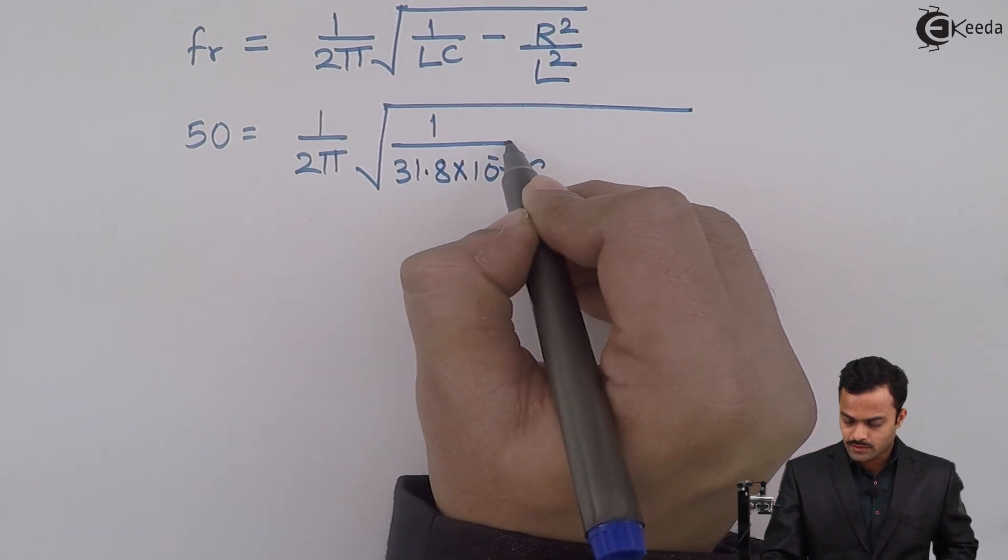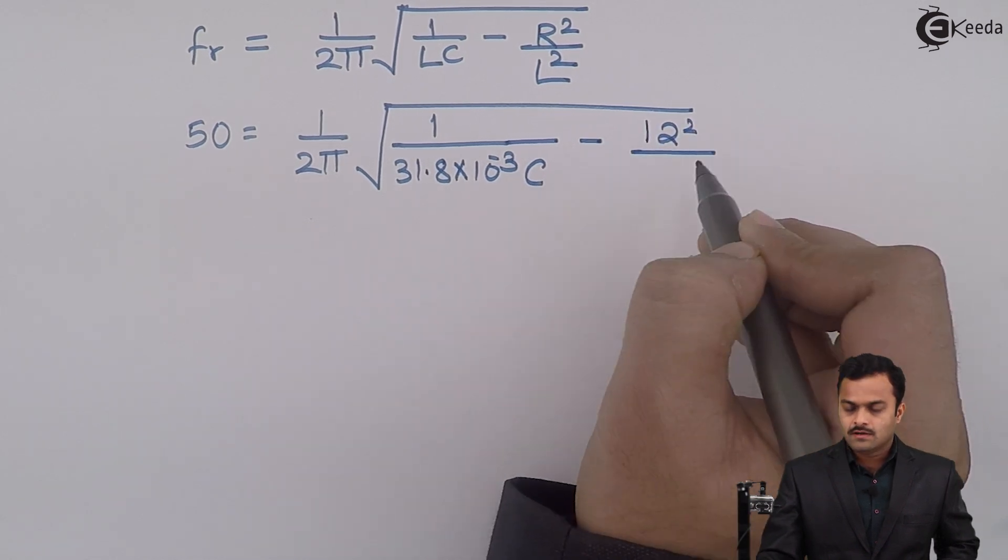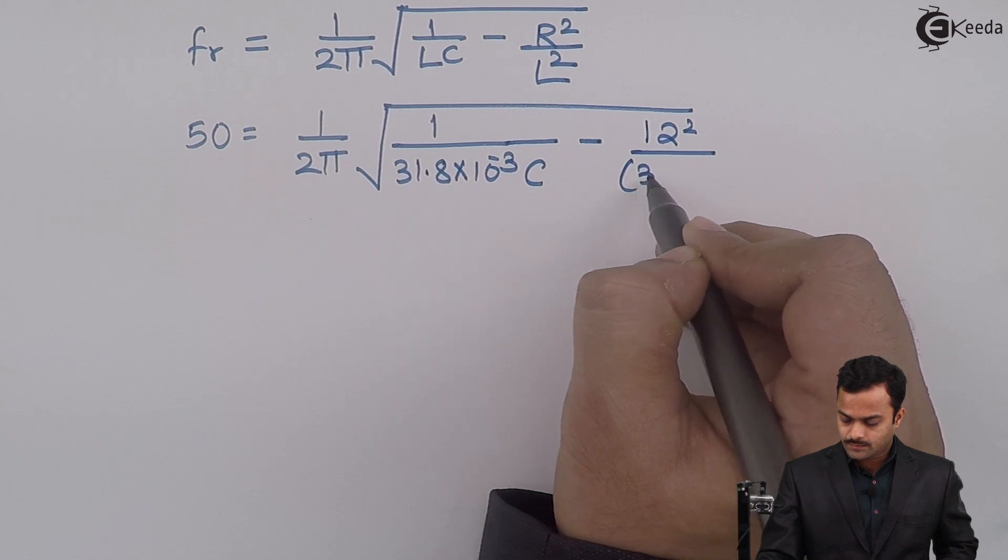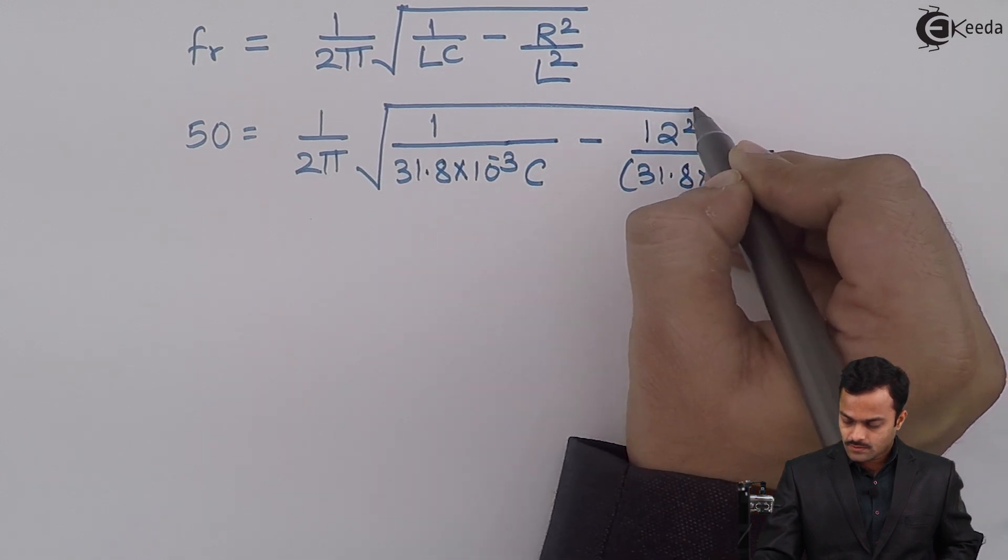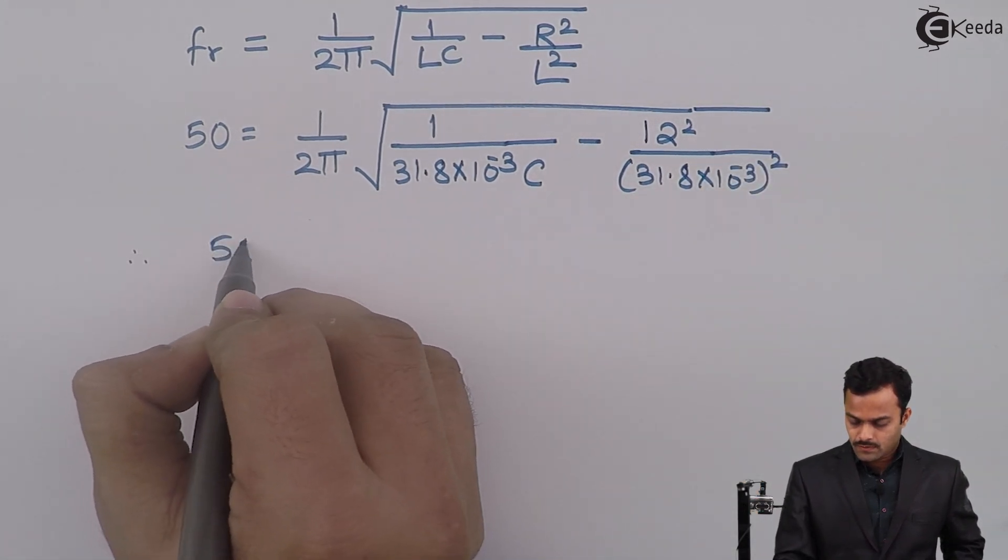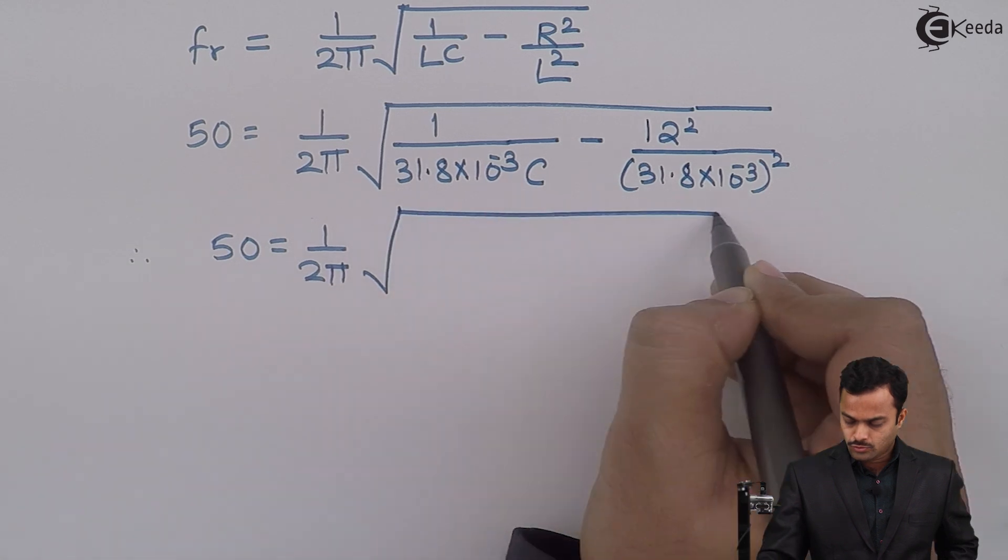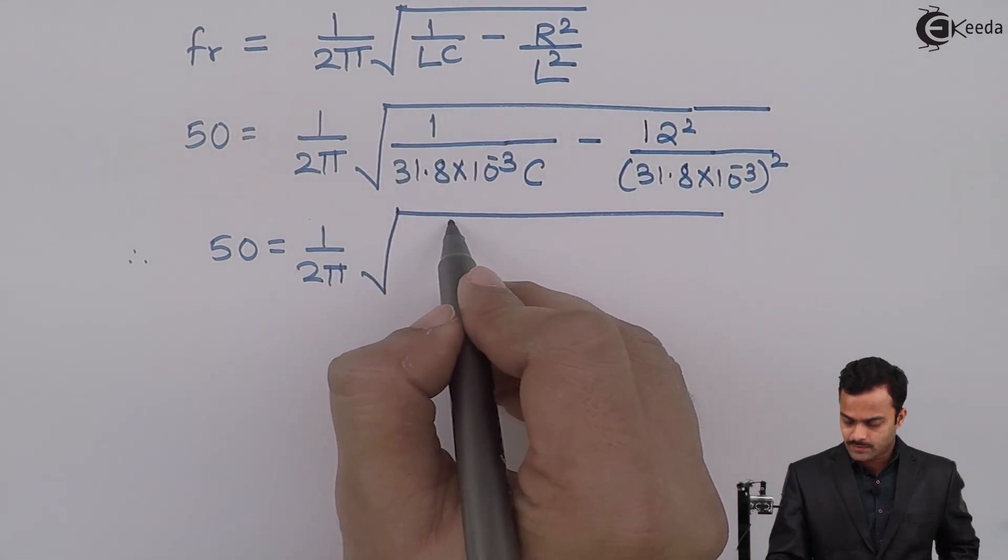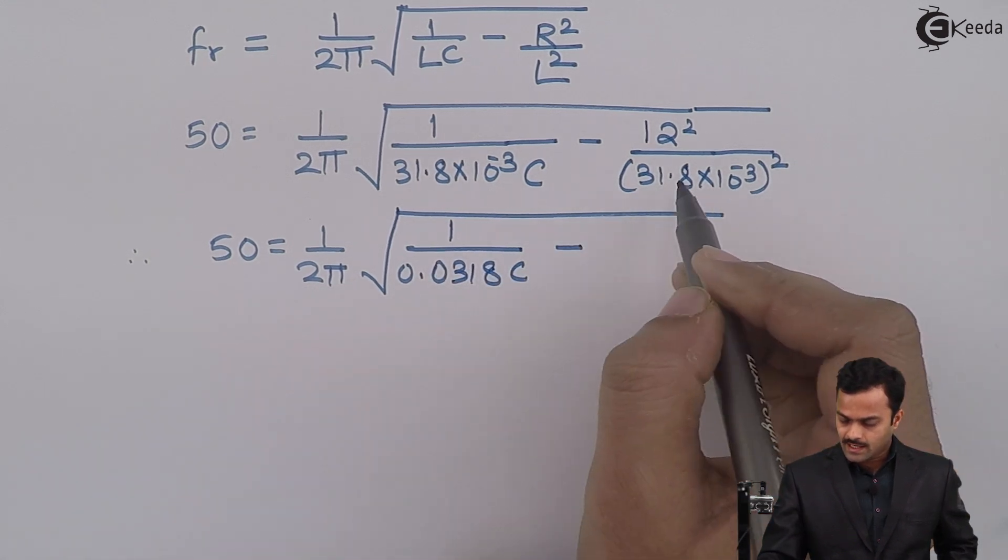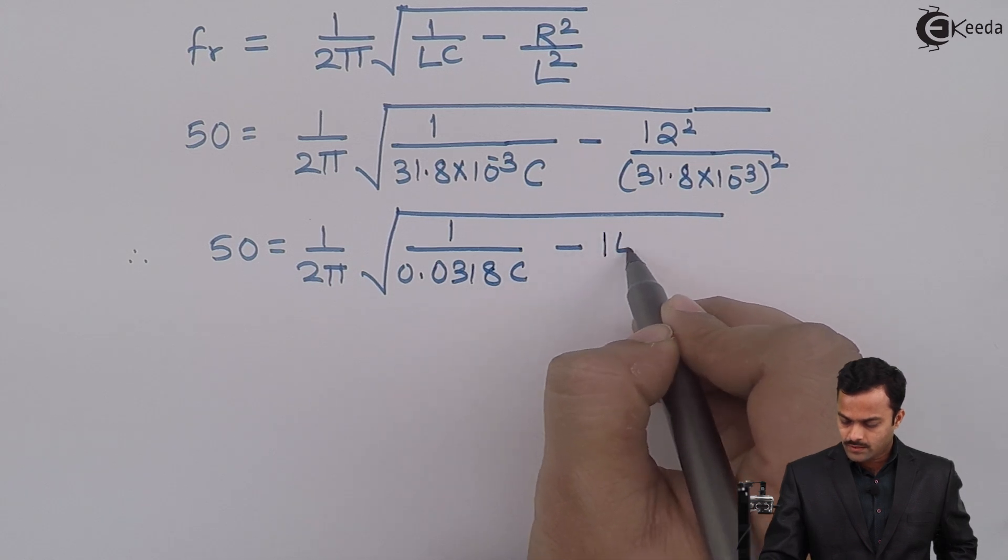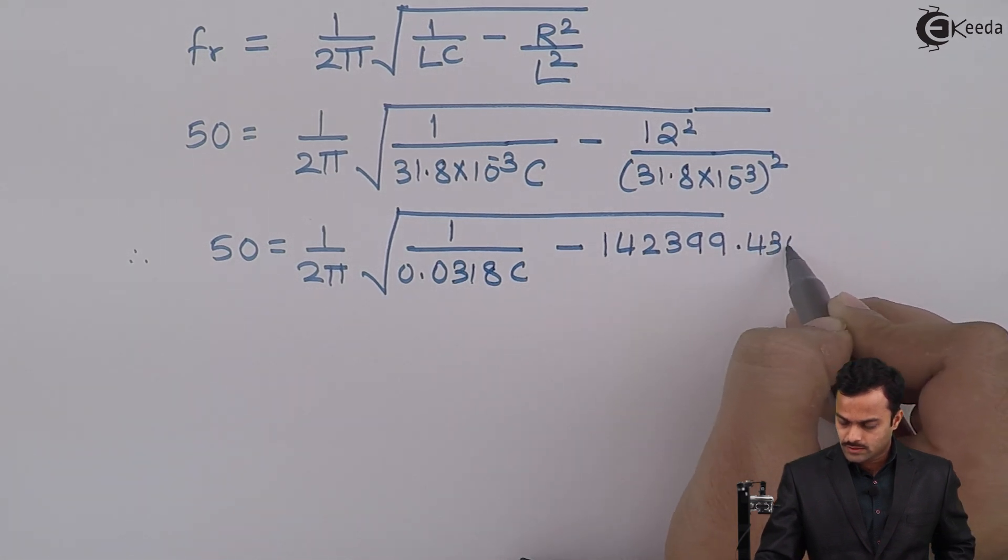We are supposed to calculate C. R is 12 ohm, so it's 12 square. L square is again 31.8 into 10 raised to minus 3 whole square. If you solve, 50 equal to 1 upon 2π root of 1 upon 0.0318 C and answer for this will be 142399.4304.